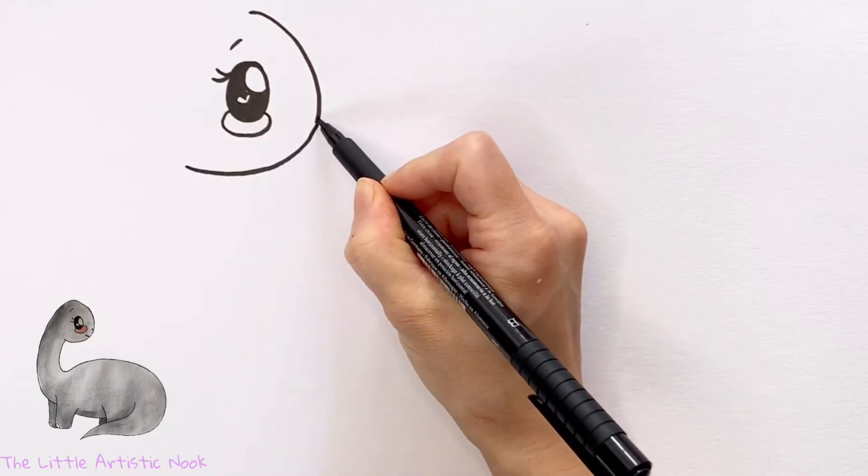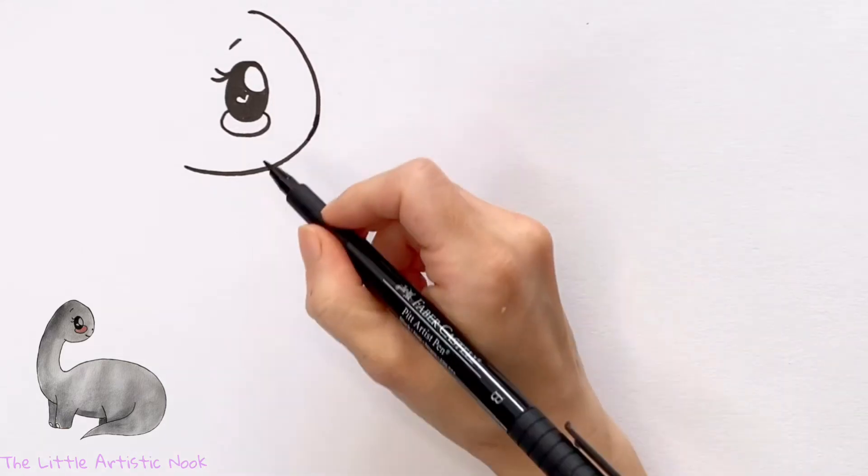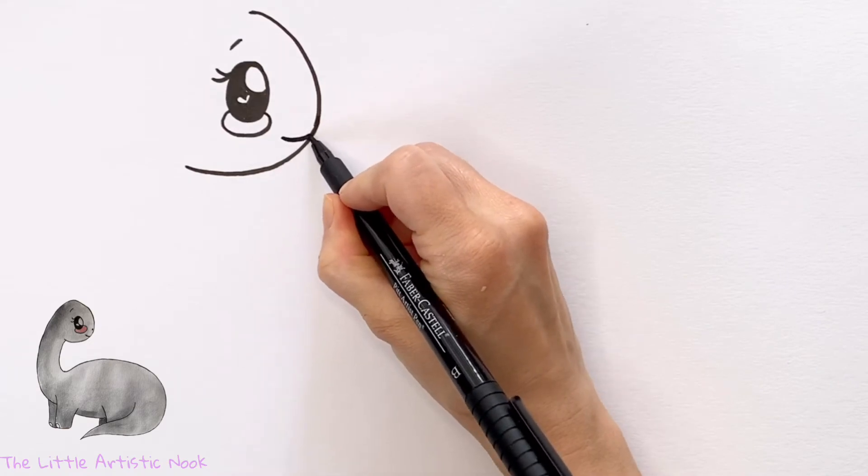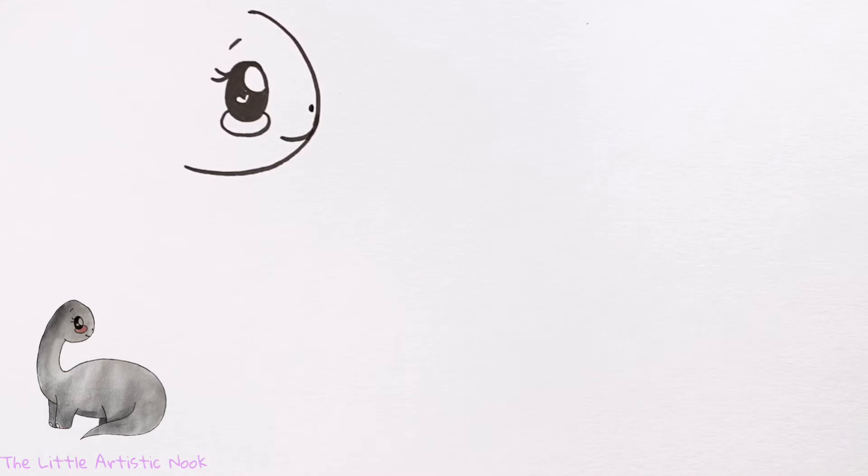And we'll close it off so we have something that looks like a big U facing the top left corner. You can add a little mouth with a little curve and a small dot for a nostril just in front of the eye and cheek. Now I'm going to come back to the top of the head.